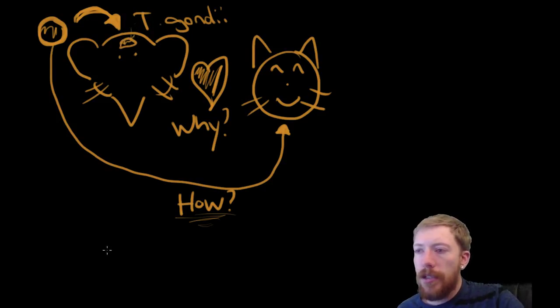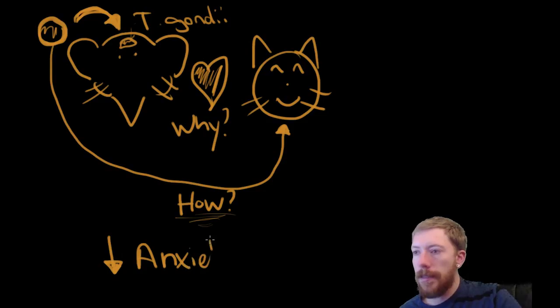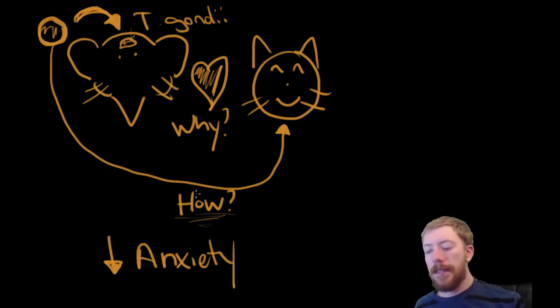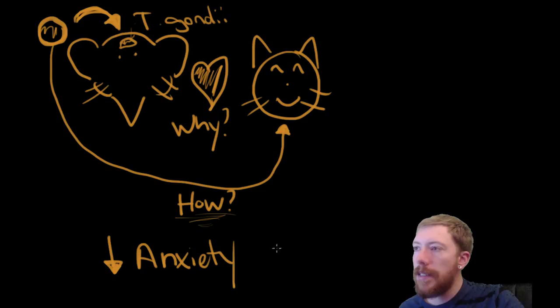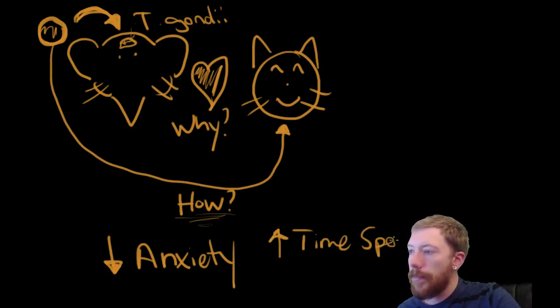But the author suggests that what might be happening is that T. gondii is actually reducing the anxiety in these rats. So, the anxiety that they would experience, usually when they are encountering something like cat urine that would lead them away from the cat urine, they don't feel that anymore. They don't have that same reaction. And by decreasing the anxiety, it increases the time spent near cats. And by doing so, again, it increases the transmission of this parasite.